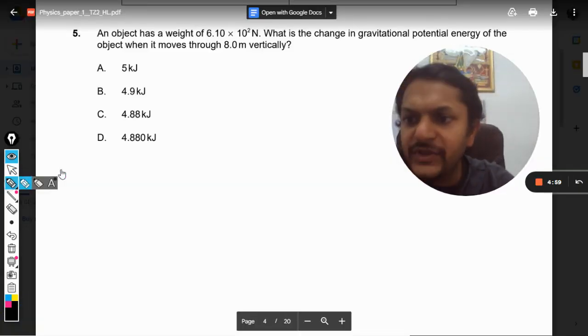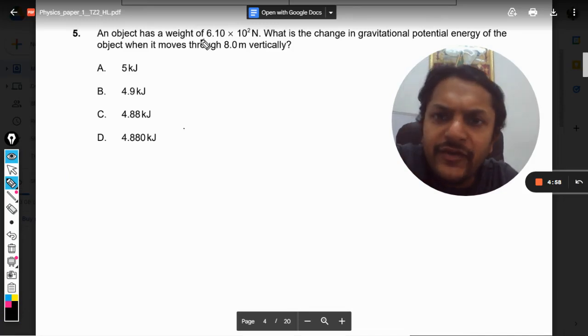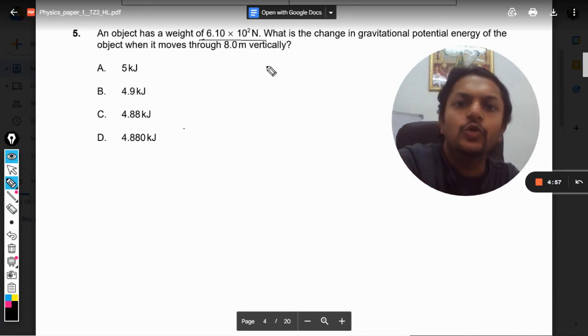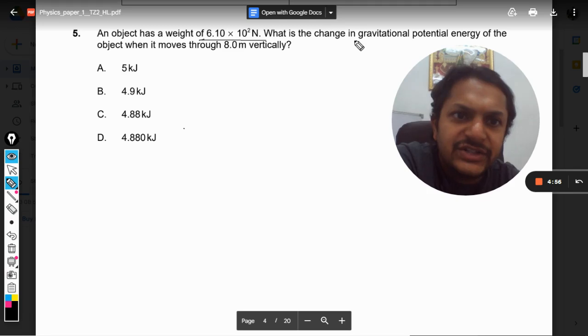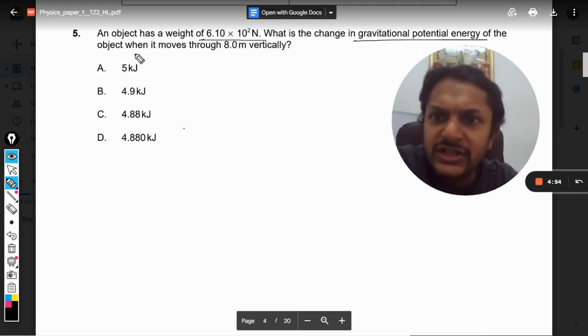Okay, let us see this question. An object has a weight of 6.1 × 10² Newton. What is the change in gravitational potential energy of the object when it moves through 8 meters vertically? It's simple and straightforward.